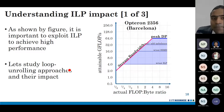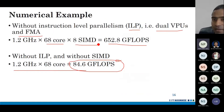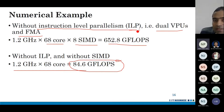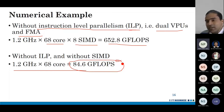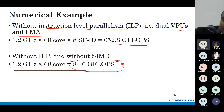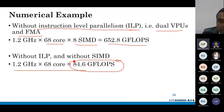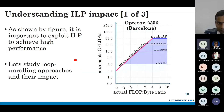Now that we've understood the importance of achieving a high level of instruction level parallelism (ILP), let us come to the application or code perspective. We have seen the numbers for peak performance; now let us look at the code. It is important to exploit ILP to achieve high performance. Let us study loop unrolling approaches and their impact.